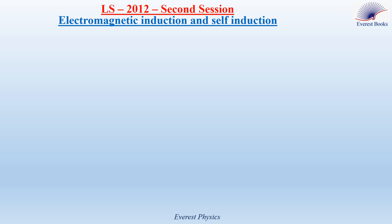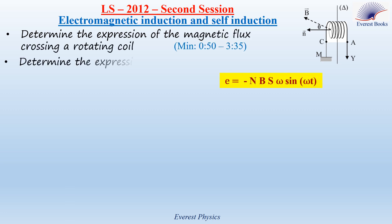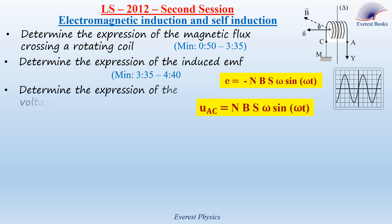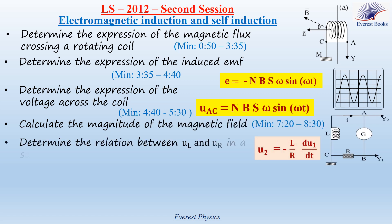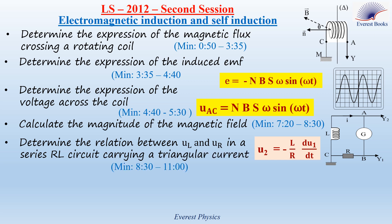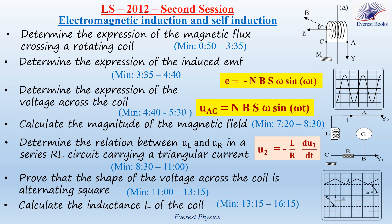In this solved official exam exercise, we are going to determine the expression of the magnetic flux crossing a rotating coil, determine the expression of the induced electromotive force, determine the expression of the voltage across the coil, calculate the magnitude of the magnetic field, determine the relation between the voltage across the coil and the voltage across a resistor in a series RL circuit carrying a triangular current, prove that the shape of the voltage across the coil is alternating square, and calculate the inductance of the coil.